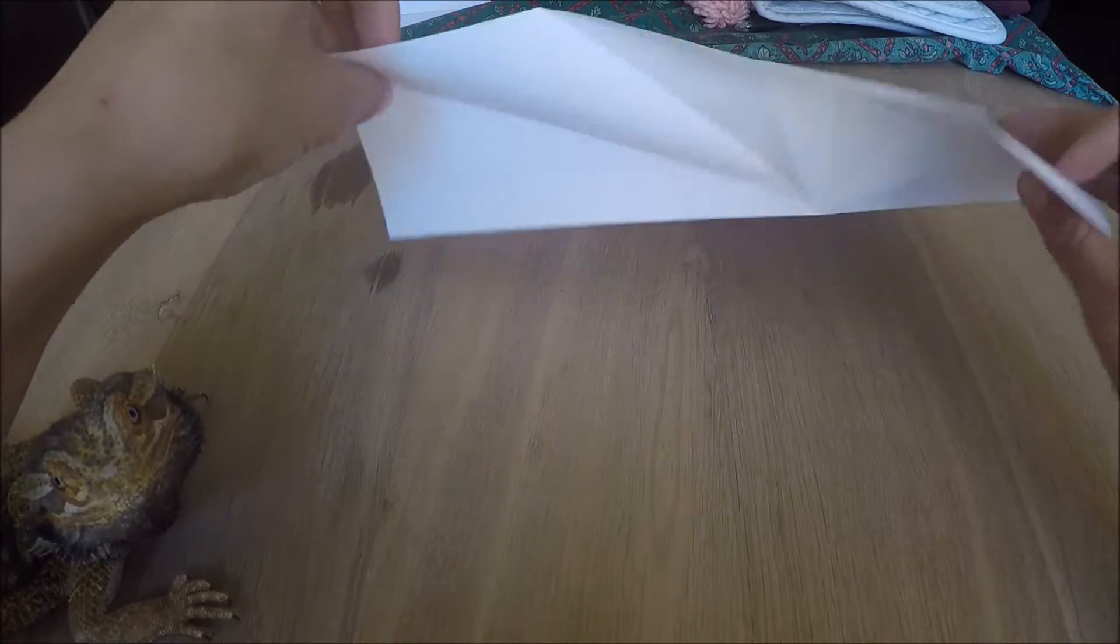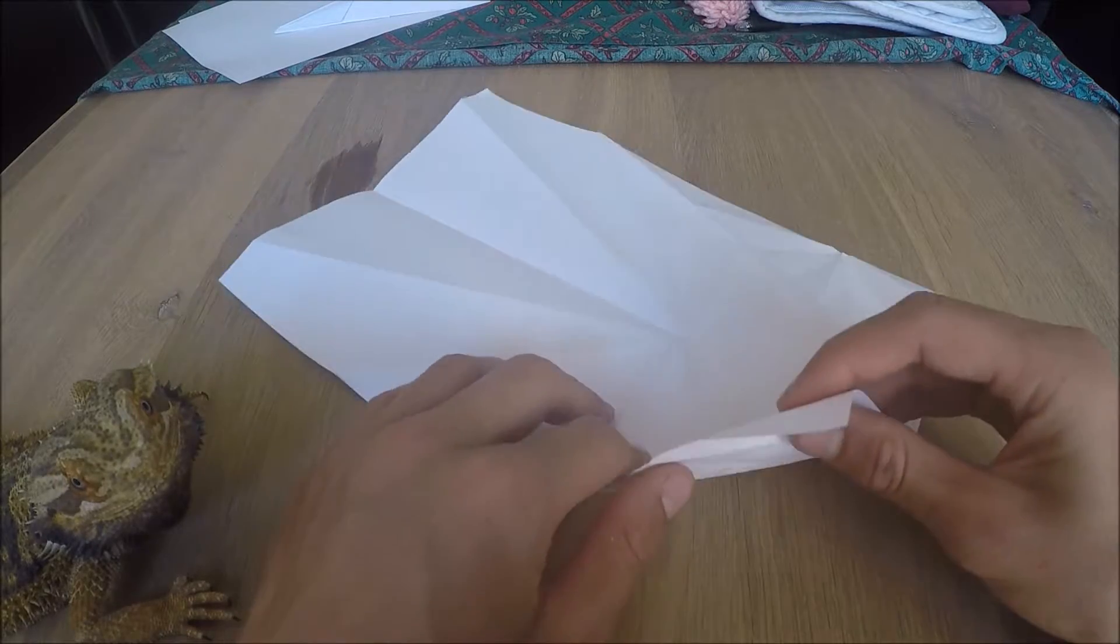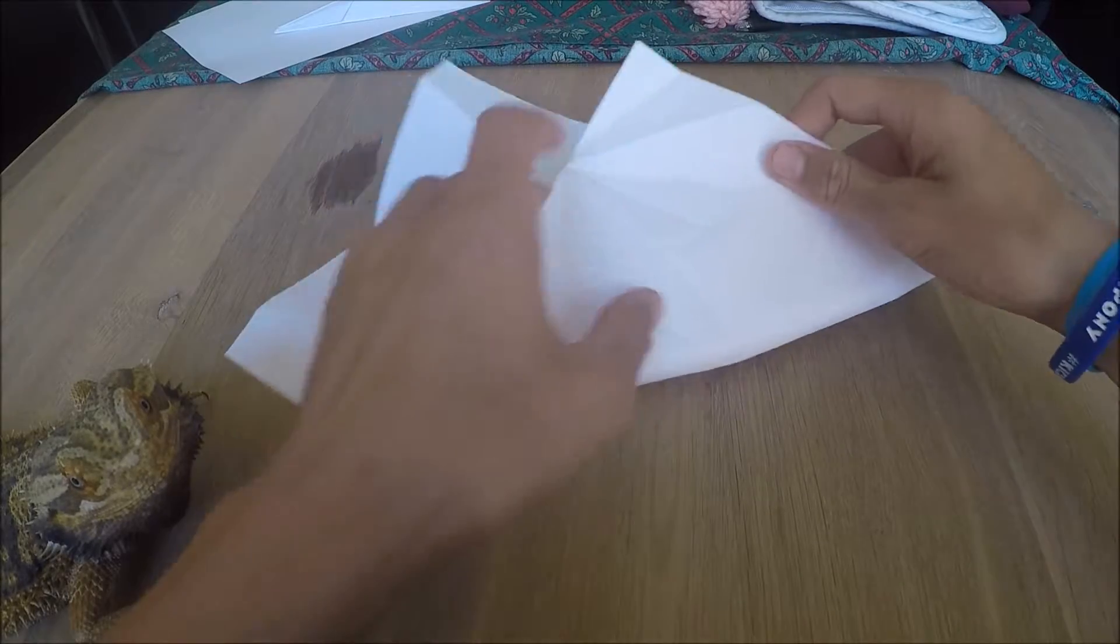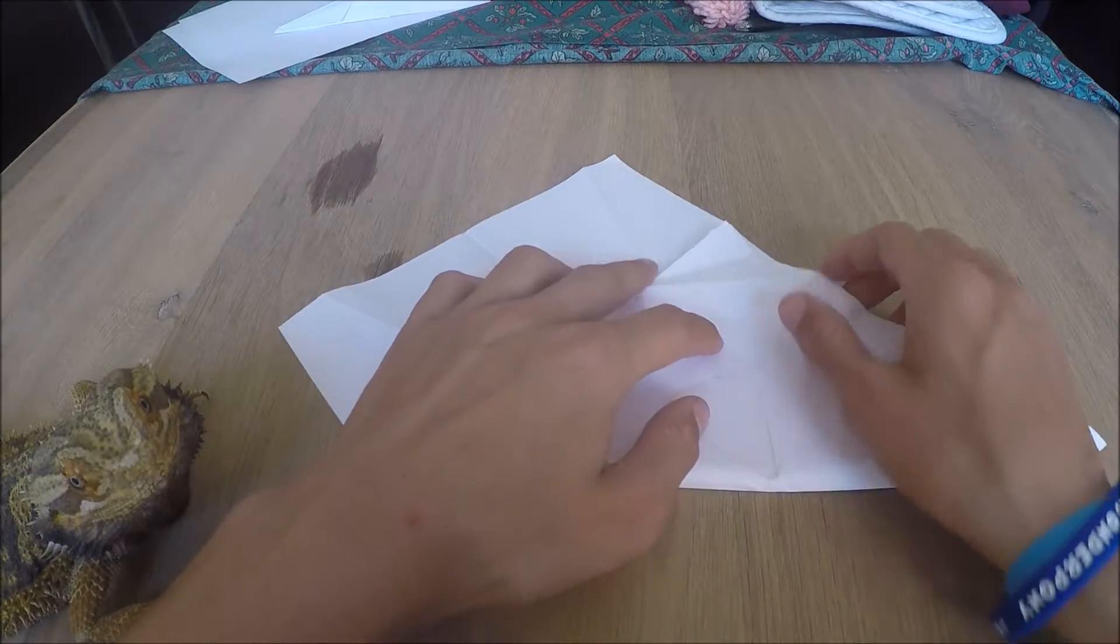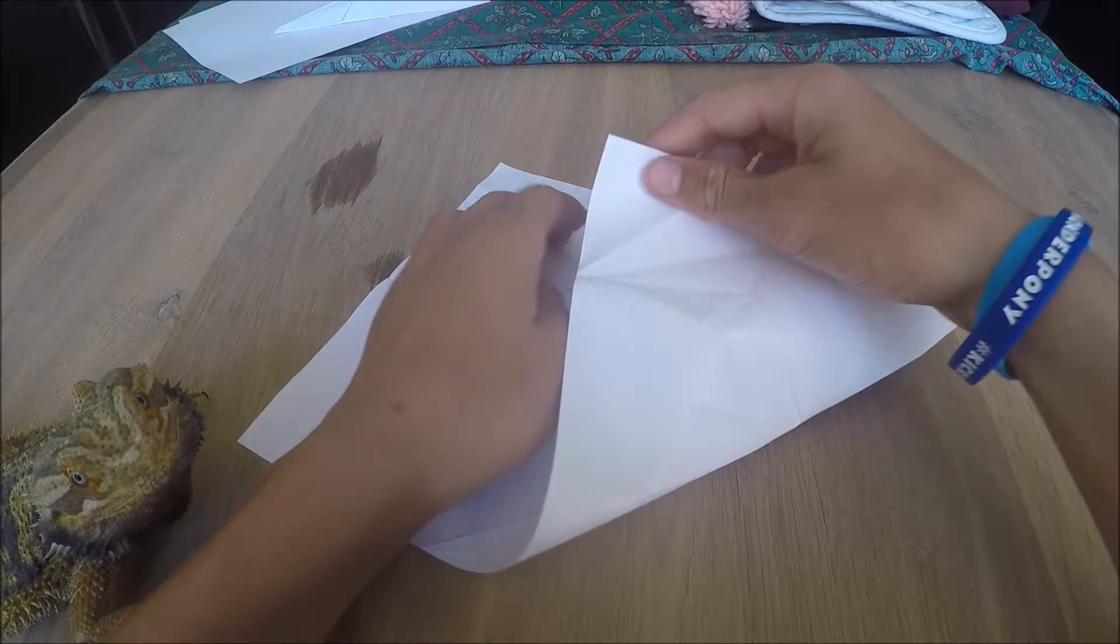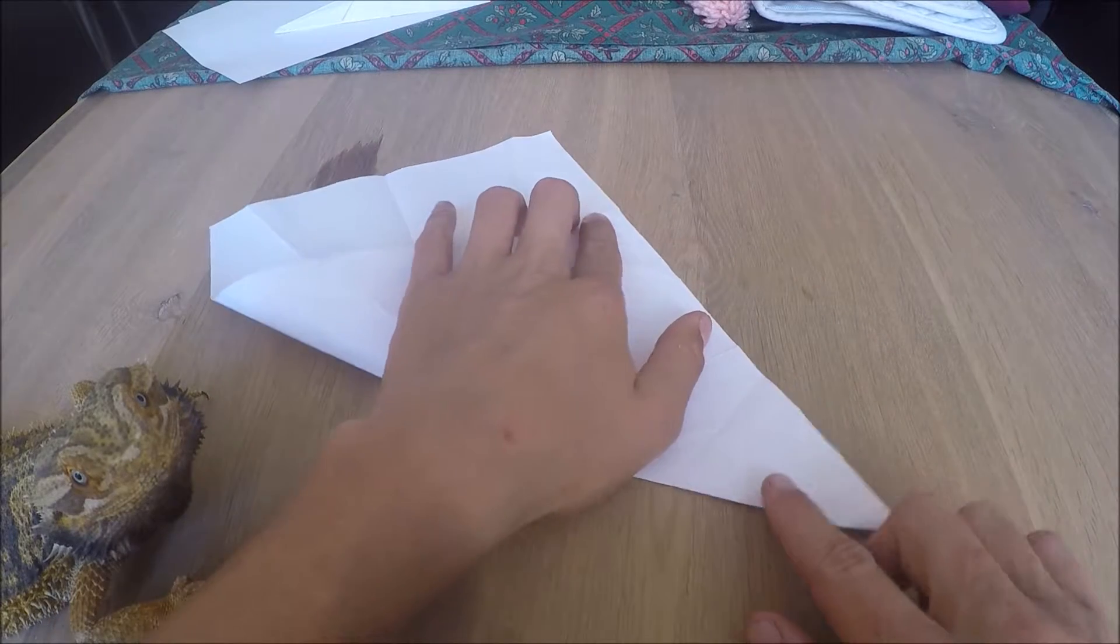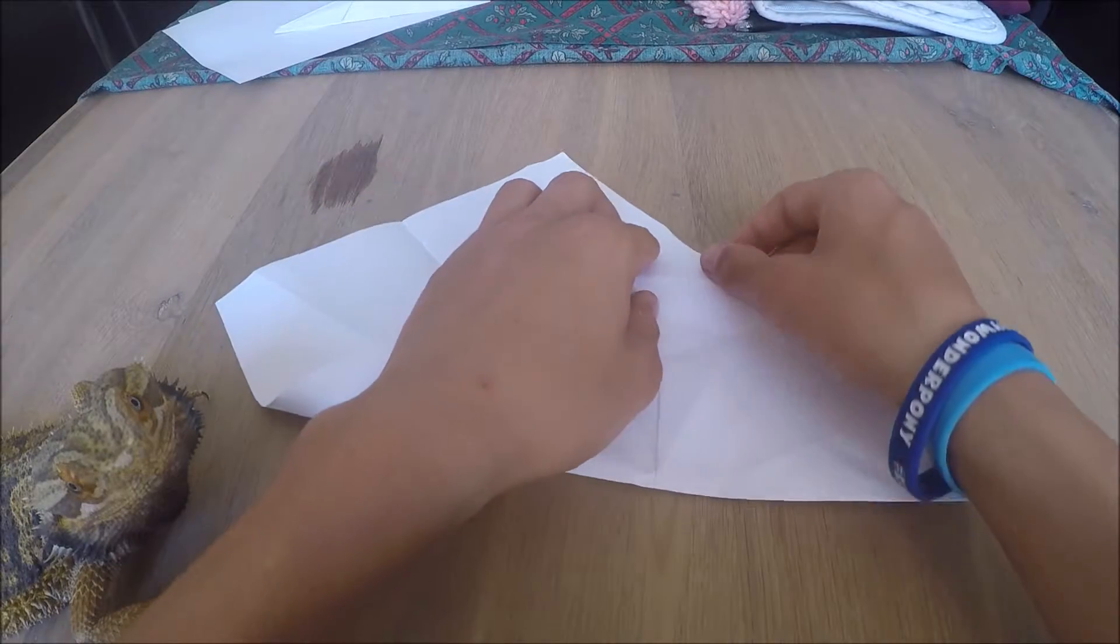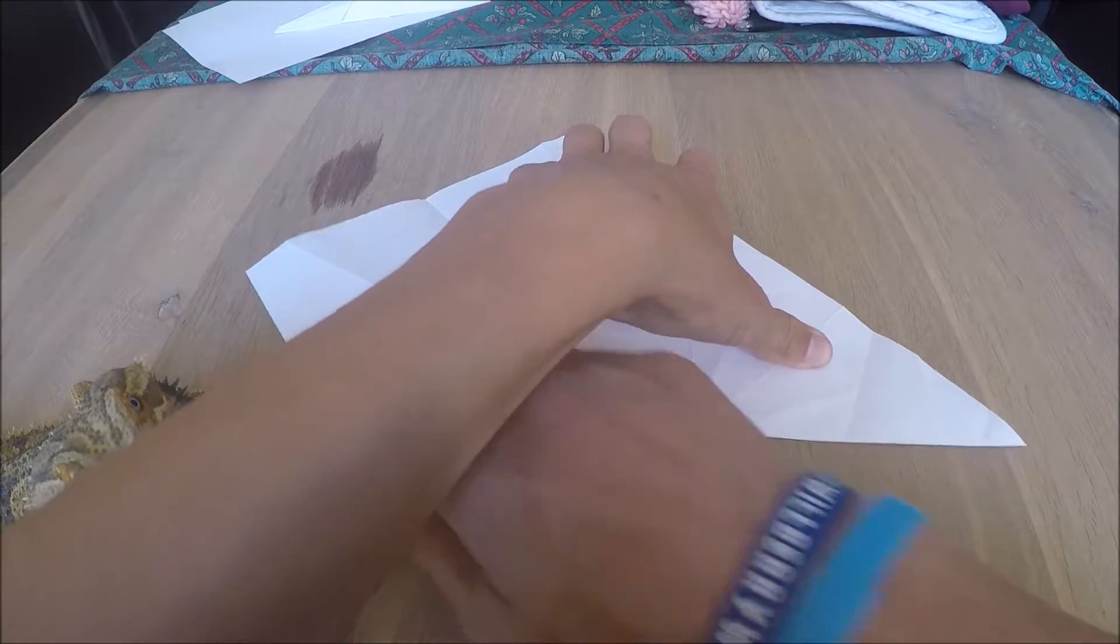After you've done this, take this corner, pull it up and then pull it over to make a triangle with the other page. What you want to do is fold it over so that this corner up here creates a perfect corner. Once you've done that, touch the corner and push the crease down.